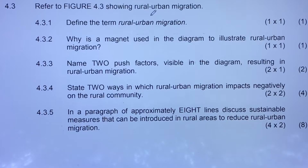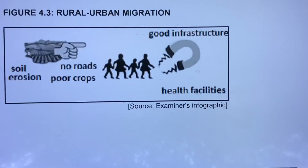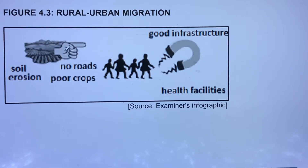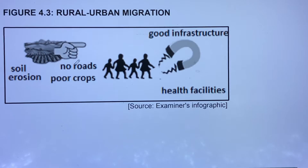The question says: refer to figure 4.3 showing rural-urban migration. In the figure, you can see a finger pointing toward good infrastructure, and a magnet with people moving towards it. The finger is pointing away from an area with no roads, poor crops, and soil erosion. People are moving from that area to areas with good healthcare facilities and good infrastructure.